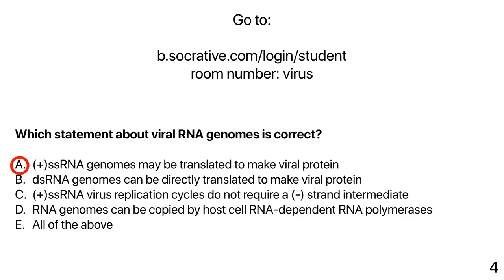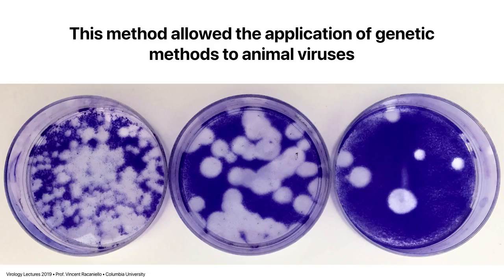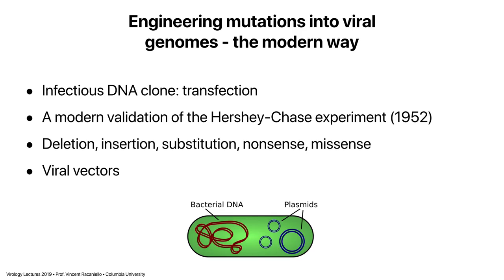Let's talk about genetic manipulation of viral genomes. In the 1950s, when we recognized that nucleic acid was the genome, people wanted to start making viral mutants, and the plaque assay was critical — it allowed picking individual plaques and making pure viral stocks of mutants for study. We used all kinds of methods to mutagenize viral genomes. But now we use DNA copies of virus genomes to study their functions — what we call infectious DNA clones, introduced into cells by transfection.